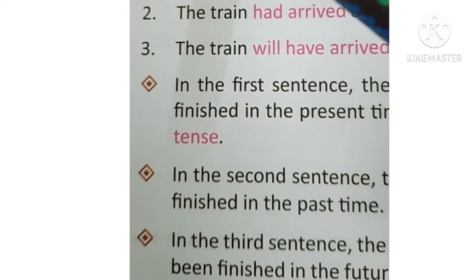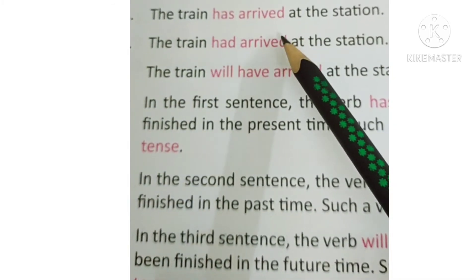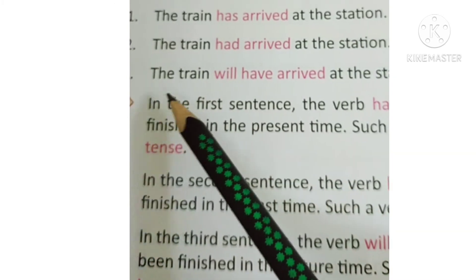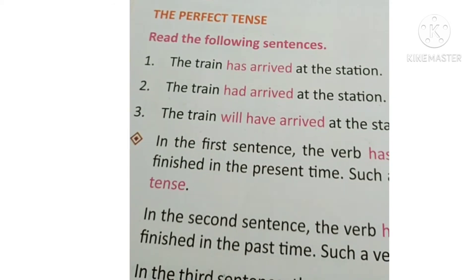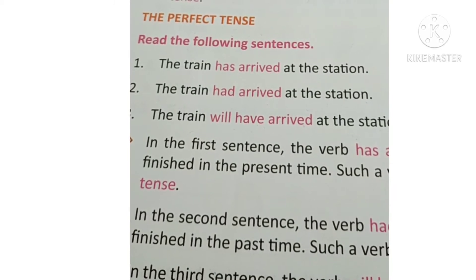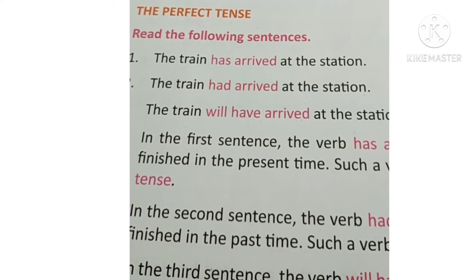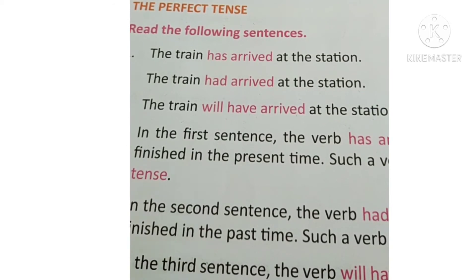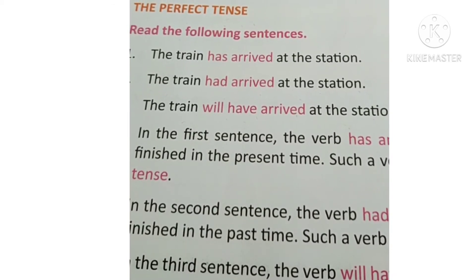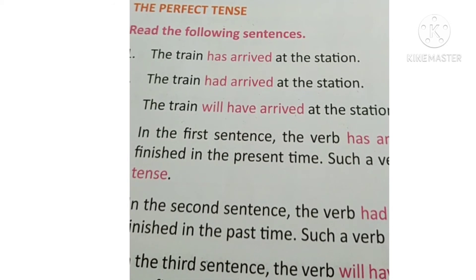Now look at this: The perfect tense. Read the following sentences: The train has arrived at the station. The train had arrived at the station. The train will have arrived at the station. In the first sentence, the verb 'has arrived' shows that an action has been finished in the present time — such a verb is said to be in the present perfect tense. In the second sentence, 'had arrived' shows that the action had been finished in the past time — such a verb is said to be in the past perfect tense. And in the third sentence, the verb 'will have arrived' shows that an action will have been finished in the future time — such a verb is said to be in the future perfect tense.